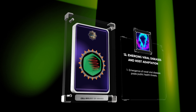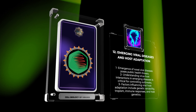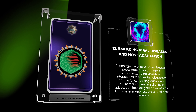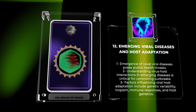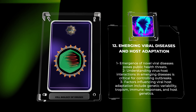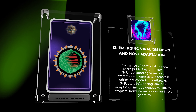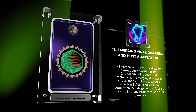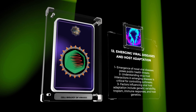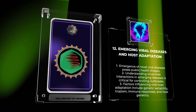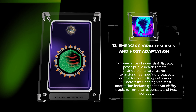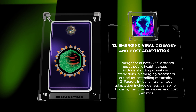In recent years, the emergence of novel viral diseases has posed significant public health threats worldwide. Viruses can jump from animal reservoirs to humans, leading to devastating outbreaks. Understanding virus-host interactions in emerging diseases is critical for predicting and controlling future outbreaks. Factors influencing viral host adaptation include viral genetic variability, viral tropism, host immune responses, and host genetics. By studying these factors, we can gain insights into the mechanisms of cross-species transmission and develop strategies to prevent or mitigate the impact of emerging viral diseases.